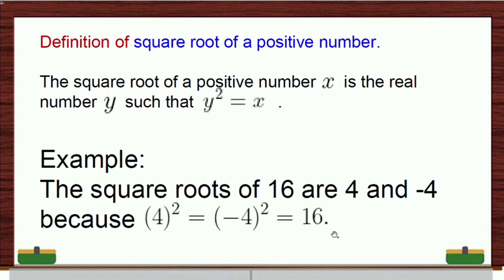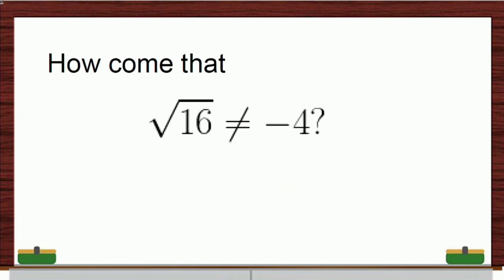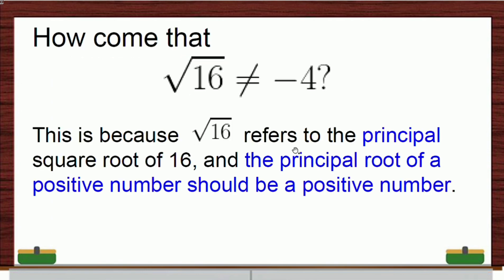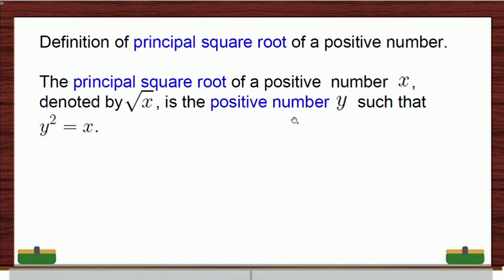But how come that this radical is not equal to negative 4? This is because this radical refers to the principal square root of 16, not the square root percent of 16. But rather, it's the principal. And the principal root of a positive number, if it exists, it should be unique. And it is also a positive number. So, it cannot be that when you get the principal root of a positive number, it will give you negative value.